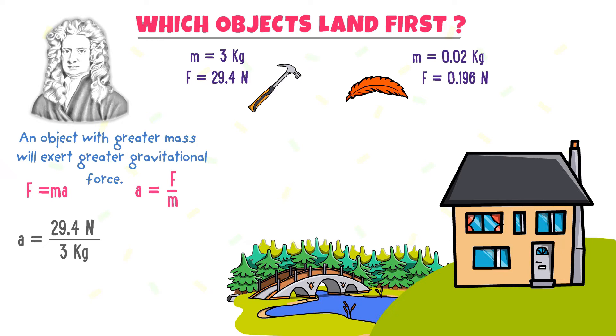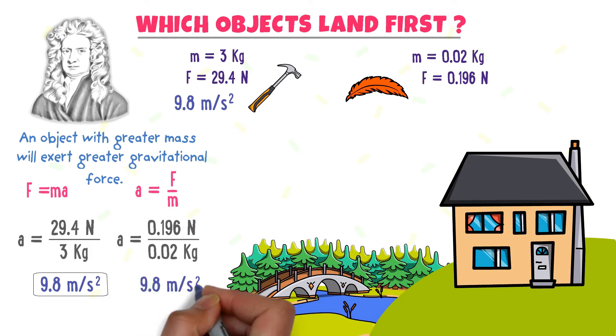We get acceleration is equal to 9.8 m per second squared. Similarly, in the case of the feather, A is equal to 0.196 N upon 0.02 kg and we get acceleration is equal to 9.8 m per second squared.